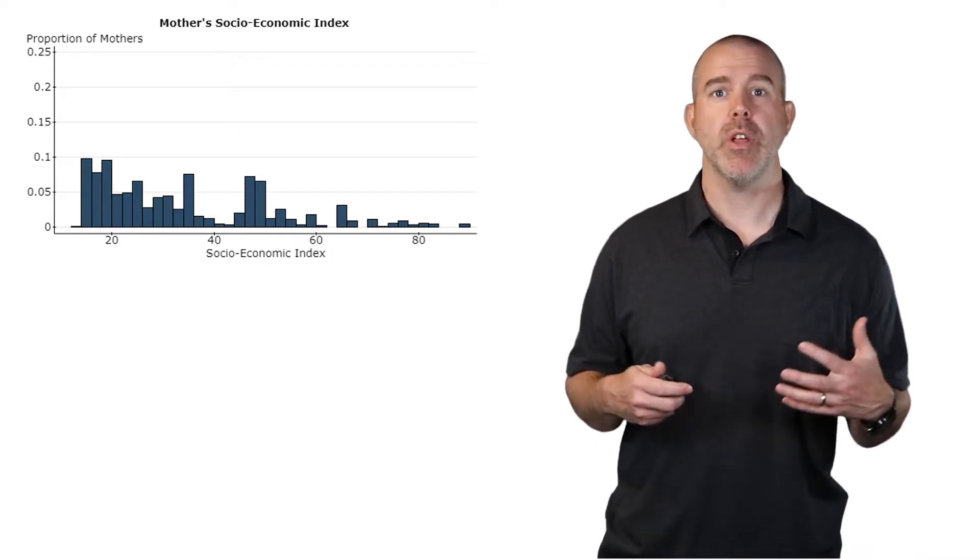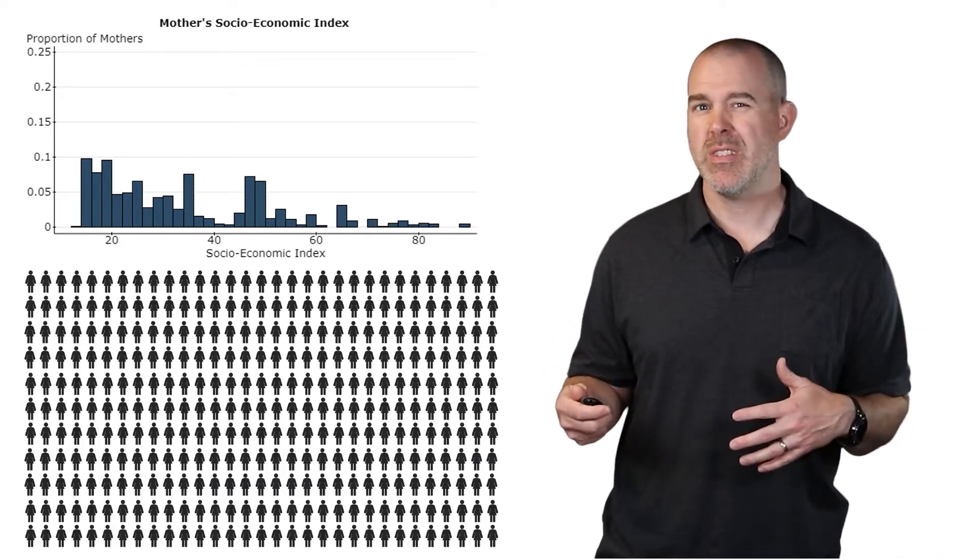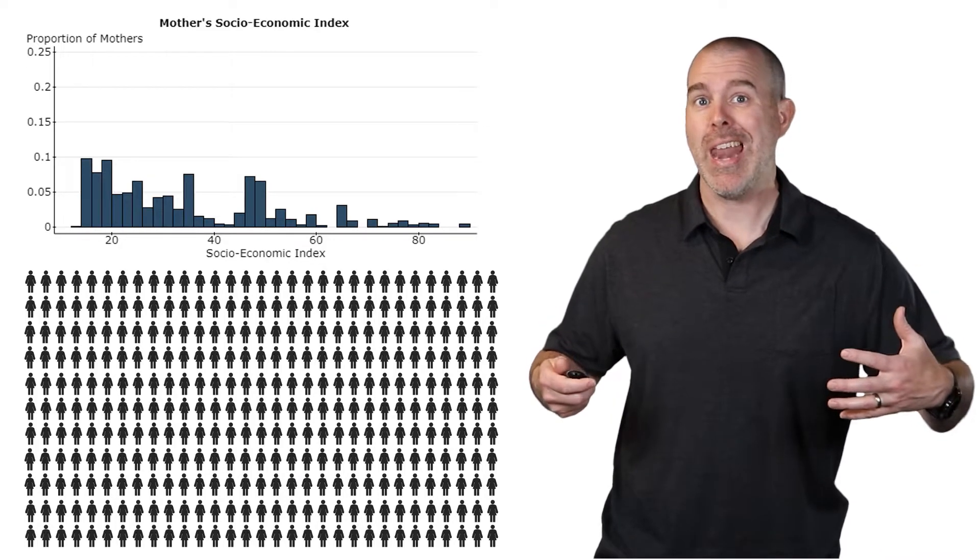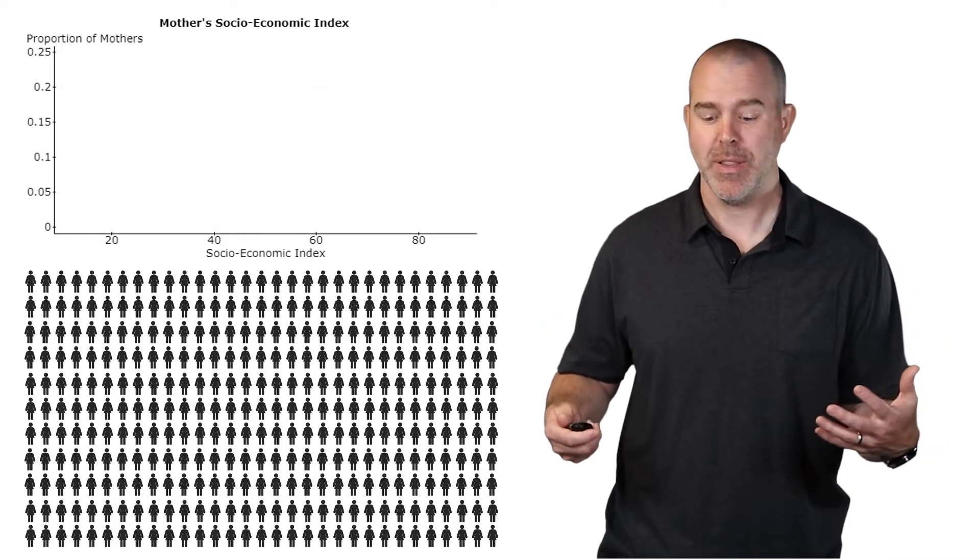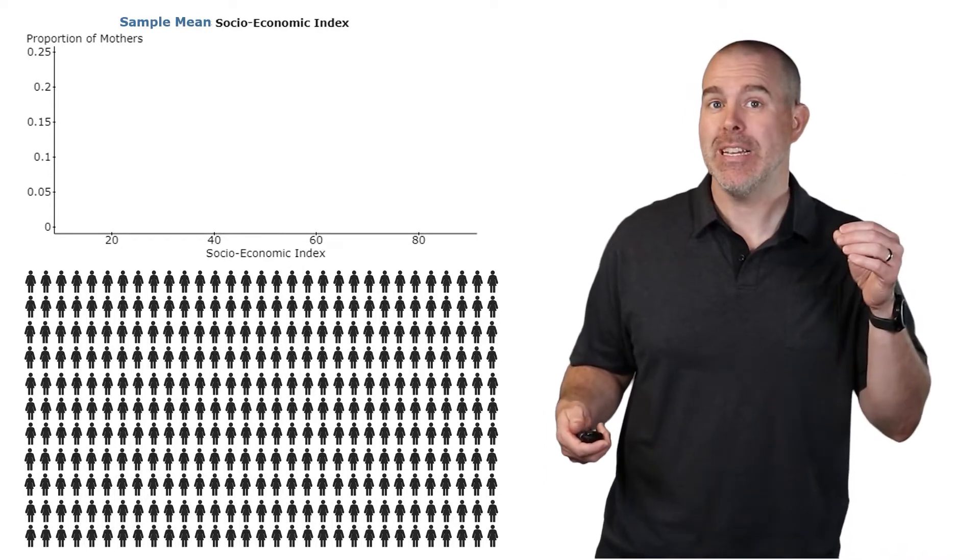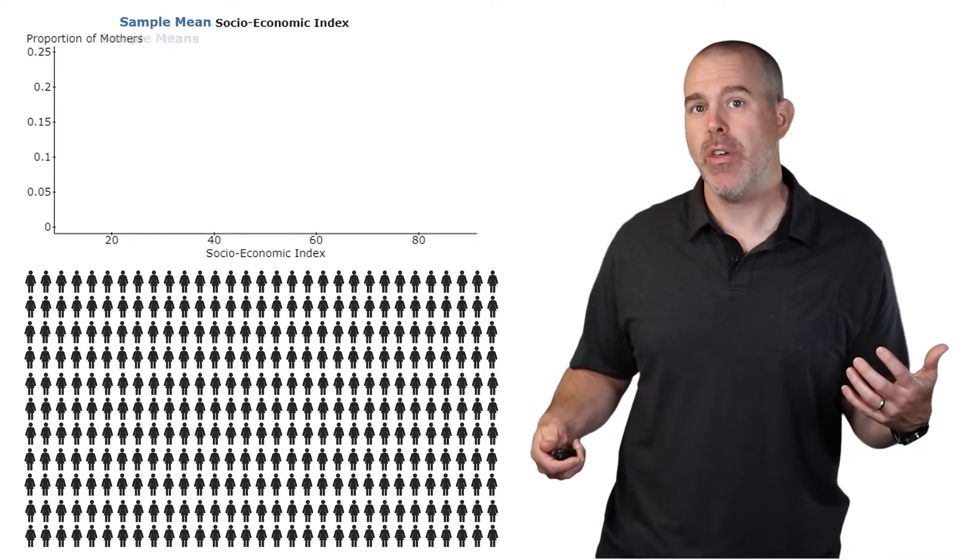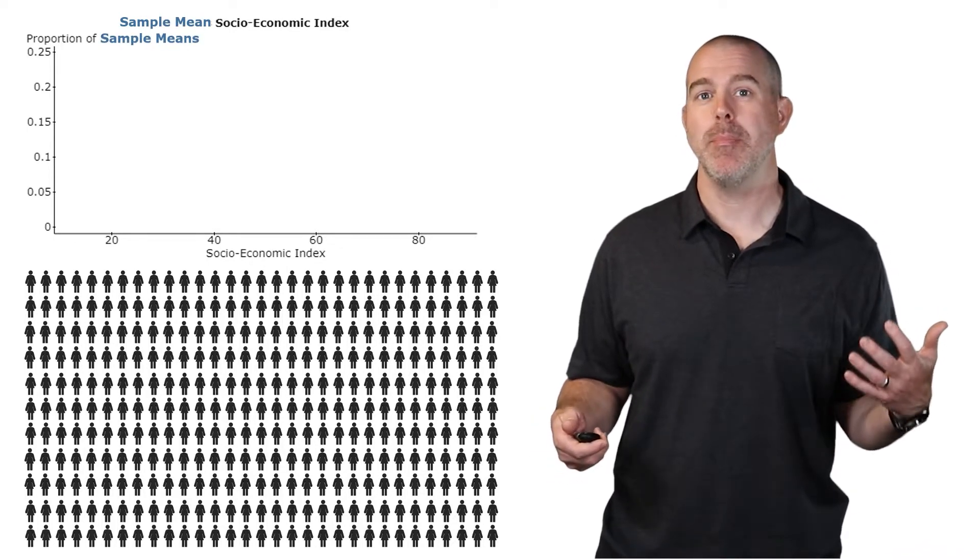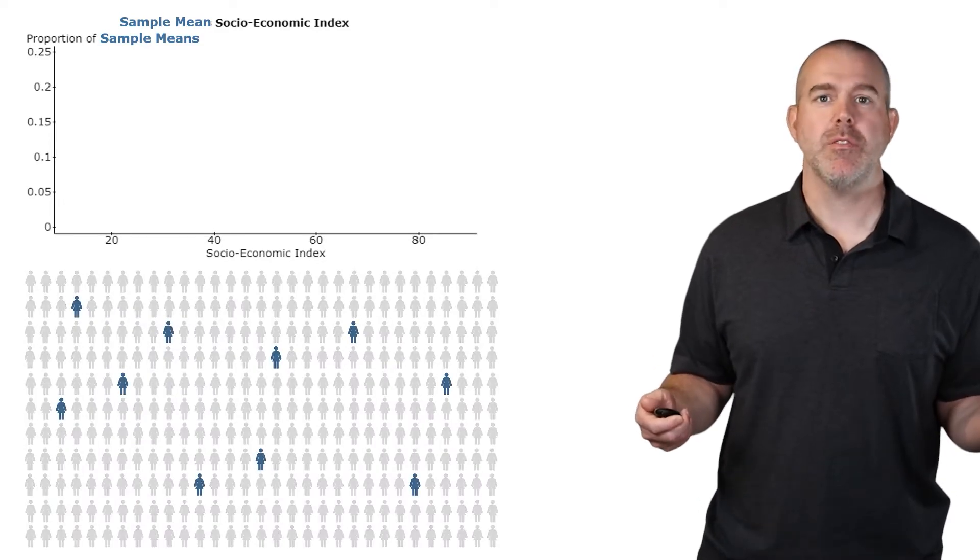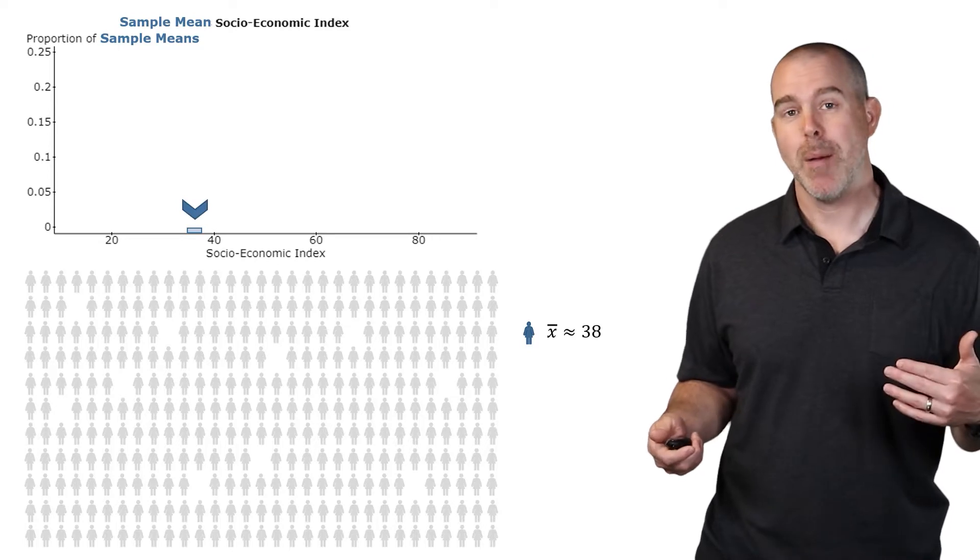What if instead of looking at the distribution of the mothers, we have this visual to represent all of the mothers and we look at samples, say a sample of size 10, and we look at the sample mean distribution. Our y-axis then, instead of the proportion of mothers, would be the proportion of sample means. We would take a sample, say this sample of size 10, compute its mean, we get 38, put that up on our histogram.